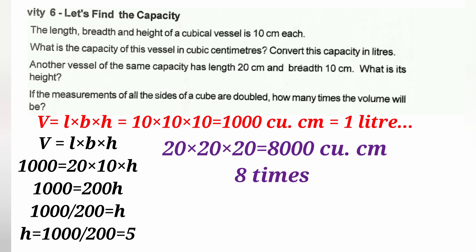Activity 6: The length and height of a cubical vessel is 10 cm each. The volume equals 10 x 10 x 10, which is 1,000 cubic centimeters. We also need to convert this capacity into liters. Since 1,000 cubic centimeters equals 1 liter, the capacity is 1 liter.